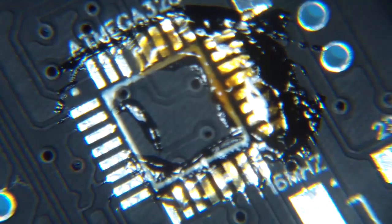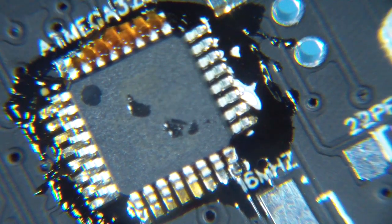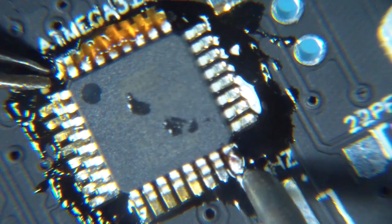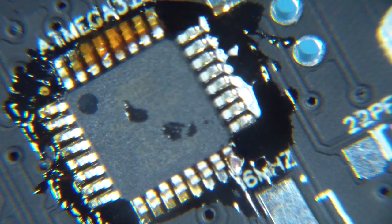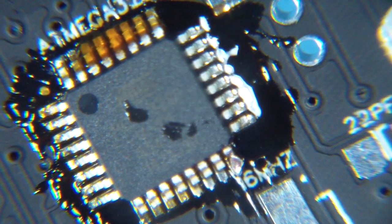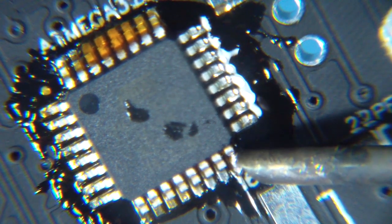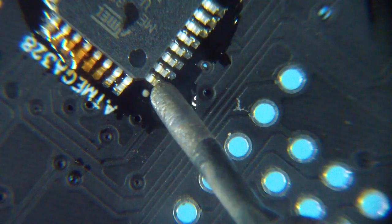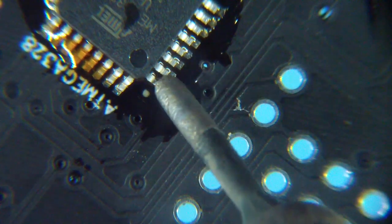Check the direction, add some flux on the board, hold the component in place and only solder the first pin. Check the component alignment and solder only one pin from the opposite direction.